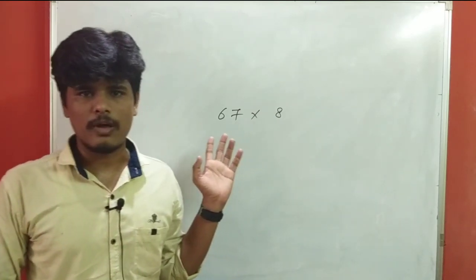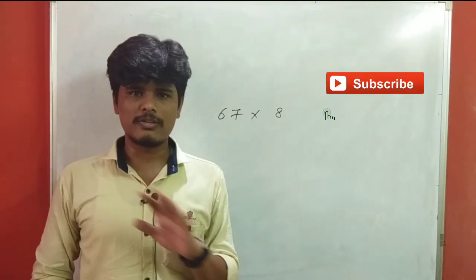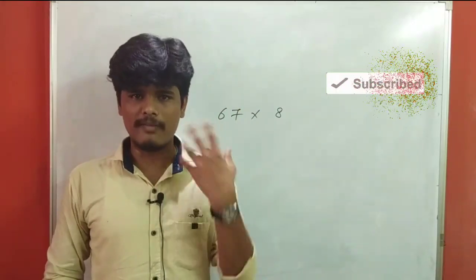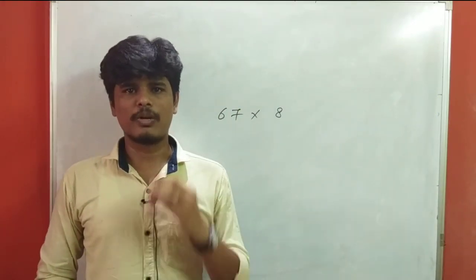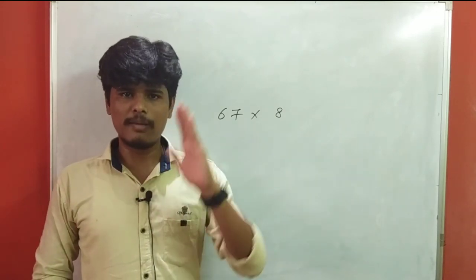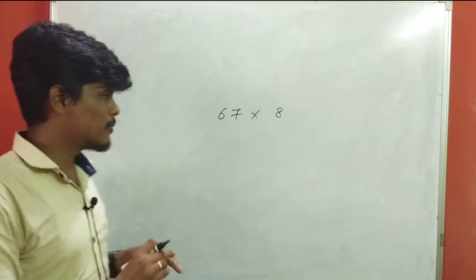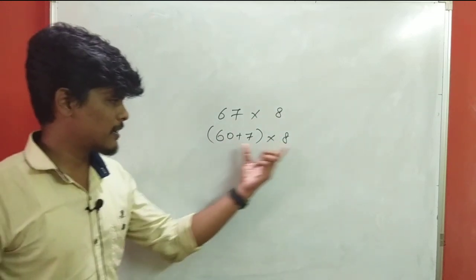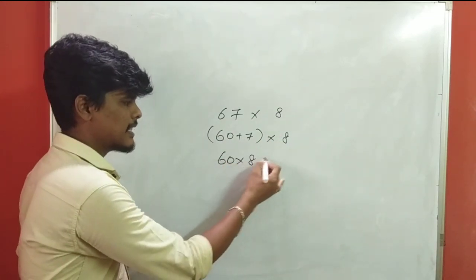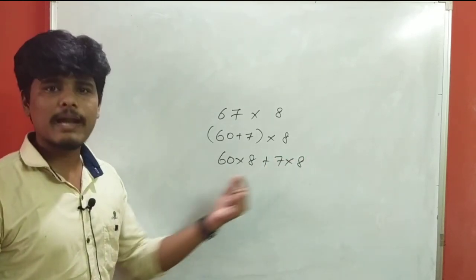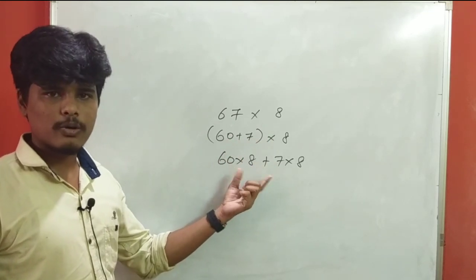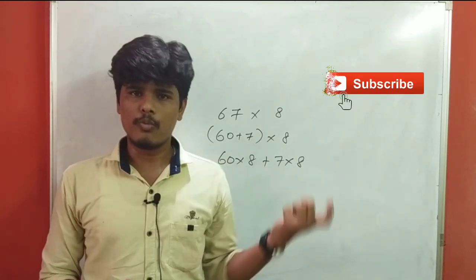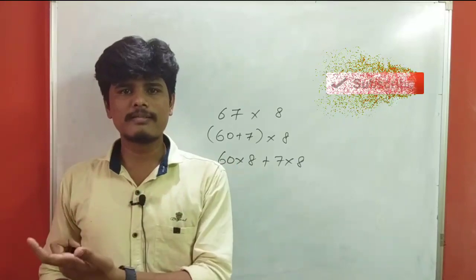If you tell me about a shortcut, you can't always do it immediately. You need to multiply and practice. Basically, you can calculate faster. For example, when you do 67 into 8, you can split it like 60 plus 7 into 8. So 60 into 8 is 480, and 7 into 8 is 56. Add them: 480 plus 56 equals 536.